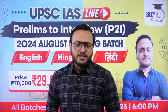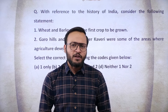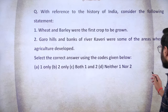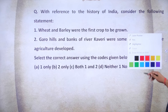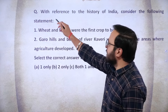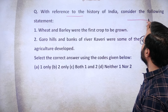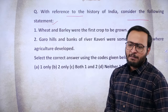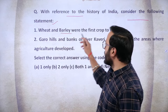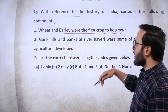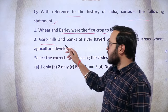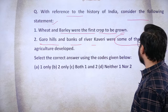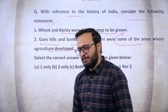Let's get started with the questions. The first question, with reference to the history of India, asks you to consider two statements: Statement 1 — wheat and barley were the first crops to be grown; Statement 2 — the Garo Hills and banks of the river Cauvery were some of the areas where agriculture developed.